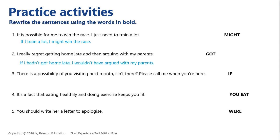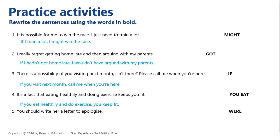'If I hadn't got home late, I wouldn't have argued with my parents.' This is clearly a regret about the past — third conditional. There's a possibility of you visiting next month, so: 'If you visit next month, call me.' It's a fact, so for facts we use zero conditional: 'If you eat healthily and do exercise, you keep fit.' And the last one is advice: 'If I were you, I'd write her a letter to apologize.'